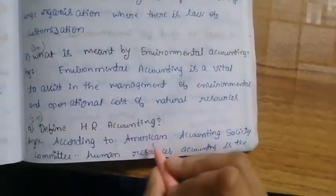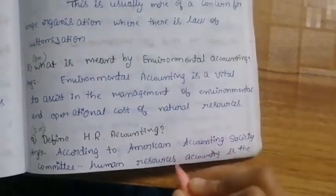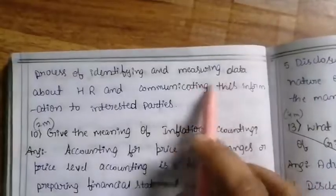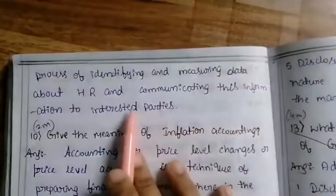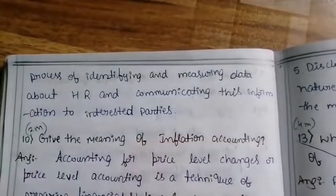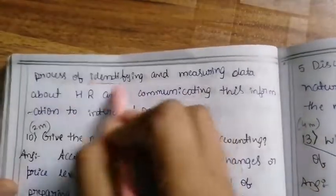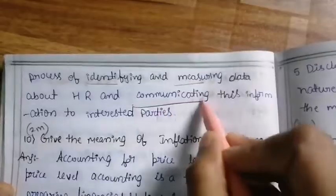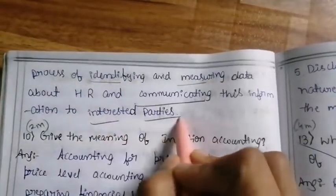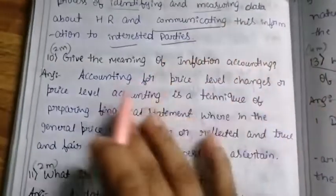Define HR accounting. According to the American Accounting Society Committee, Human Resources Accounting is the process of identifying and measuring data about human resources and communicating this information to interested parties.